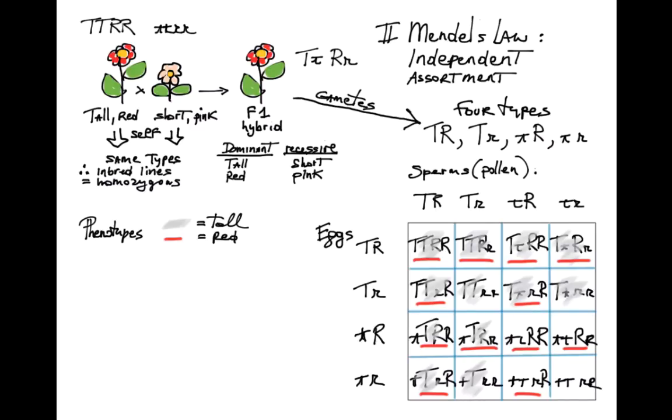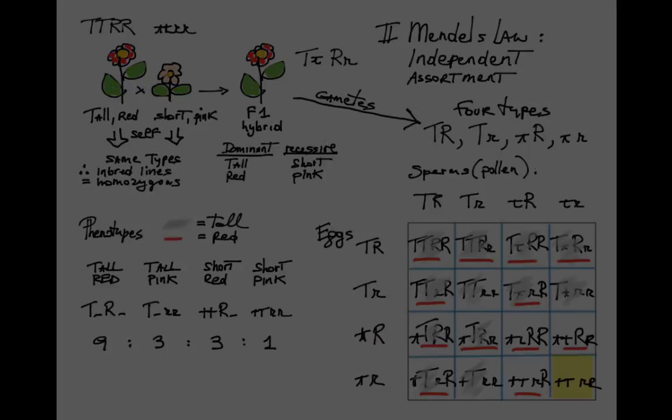But now let's score the four possible phenotypes that we can see in the F2. I get nine F2s for tall and red, three F2s for tall and pink, three F2s for short and red, and one out of 16 F2 for short and pink. The last one is the only individual in the square that is recessive homozygous.